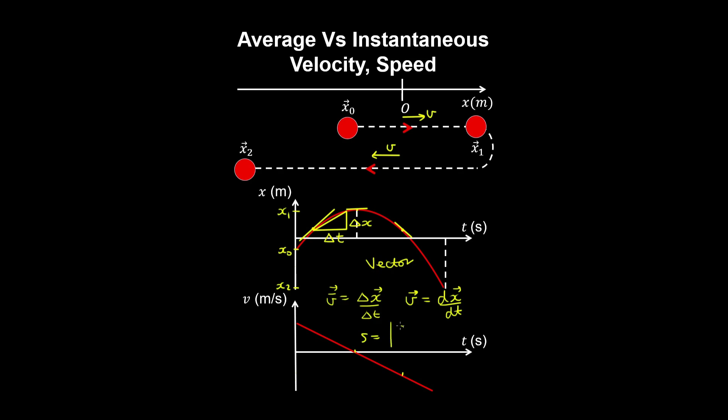Speed is the magnitude of the instantaneous velocity, so the speed is a scalar whereas velocity is a vector. So you can imagine reading the speed on the speedometer of your car—it has no direction but just a number.